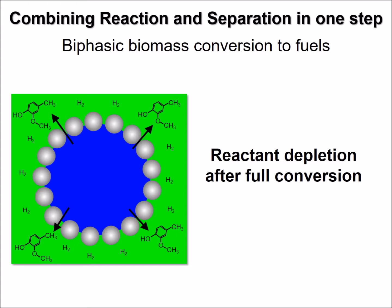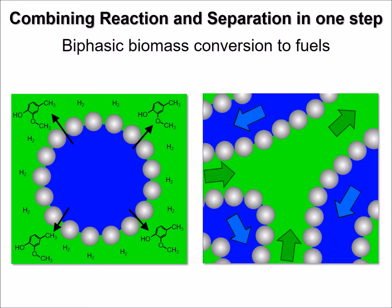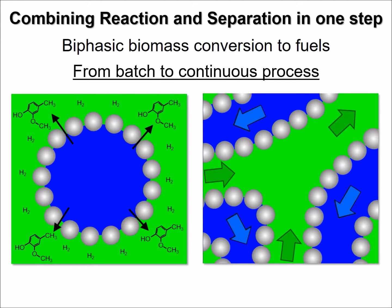Our research aims to transform biphasic catalysis into a continuous process. This can be achieved when, instead of isolated droplets, an uninterrupted channel network of oil and water is employed for the reaction. We call this structure a bicontinuous emulsion because both oil and water are continuous.